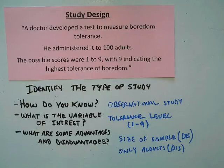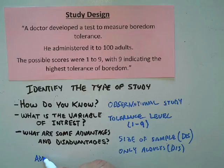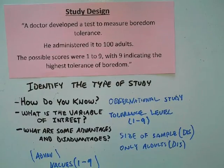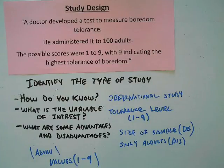As for advantages, I don't really see many — other than the fact that there are clear, defined values from one to nine, so at least there's a measurable score. That's about the best advantage I can identify from this study. So there you have it: study design — observational versus experimental design. Thanks for watching.